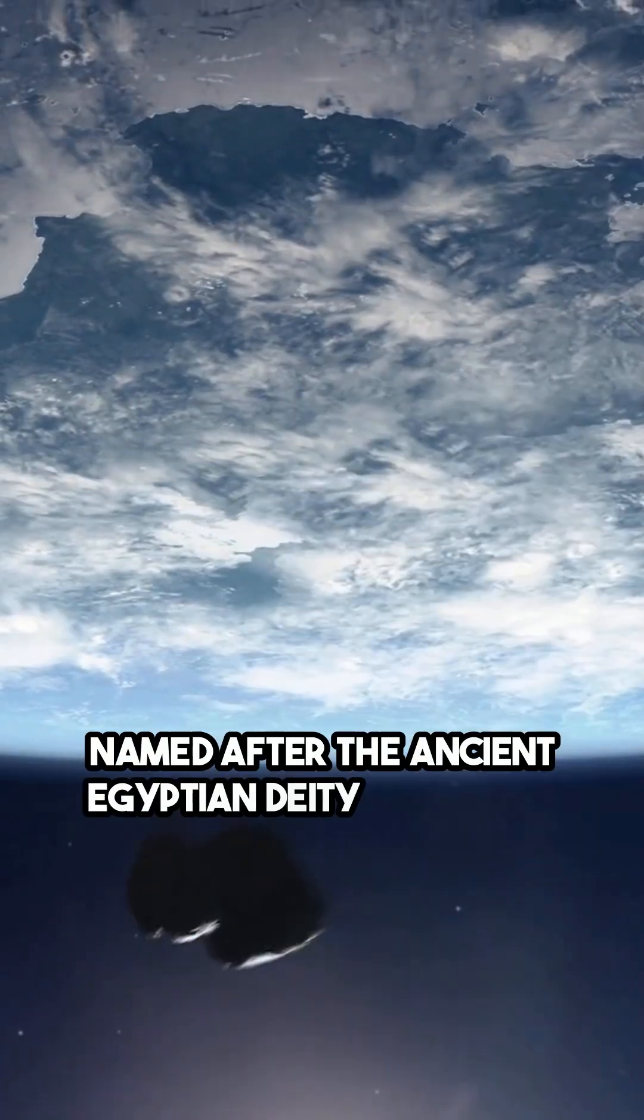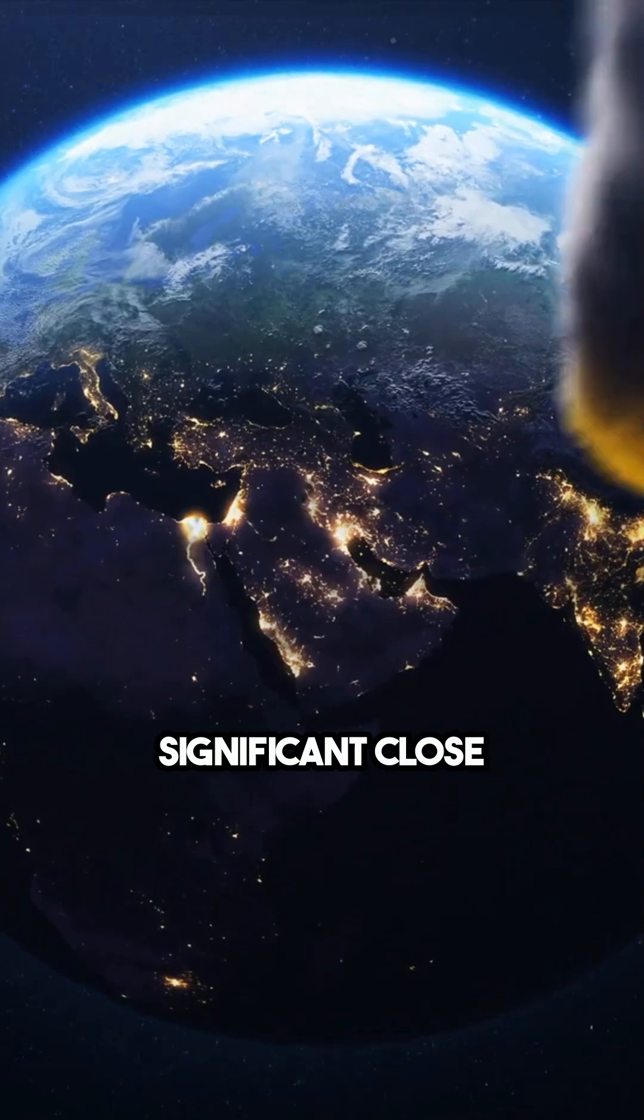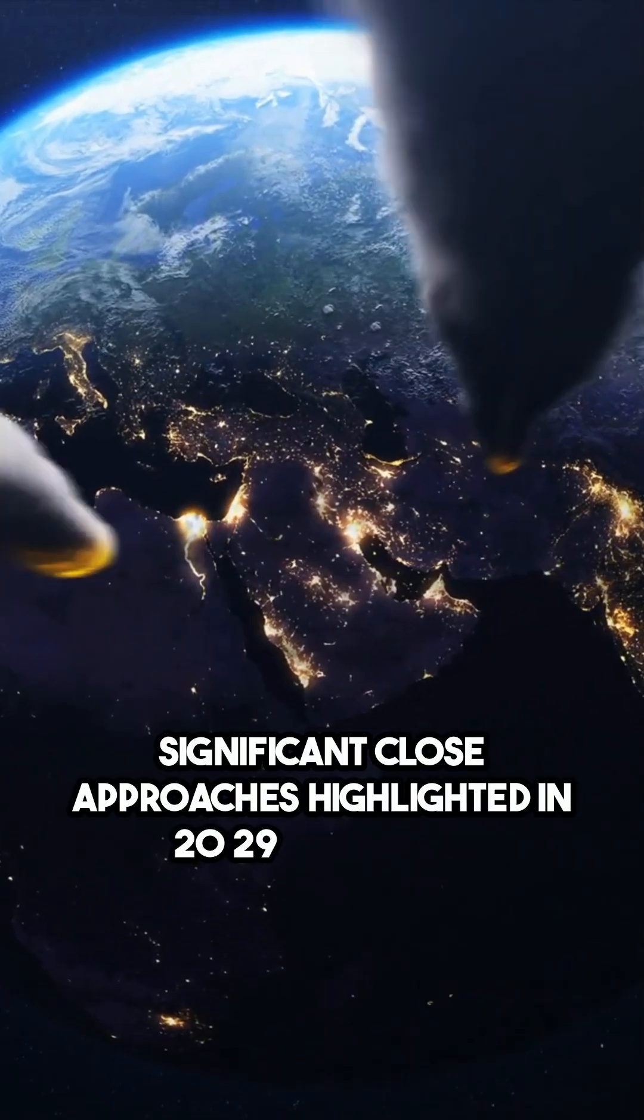Named after the ancient Egyptian deity of chaos, Apophis' orbit brings it near Earth every few years, with significant close approaches highlighted in 2029 and 2036.